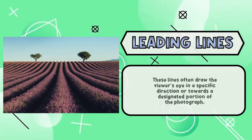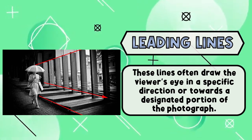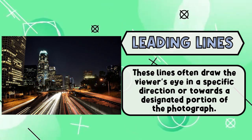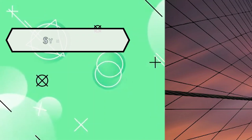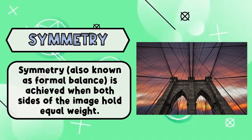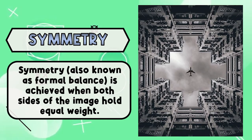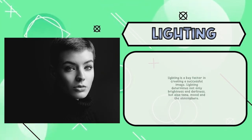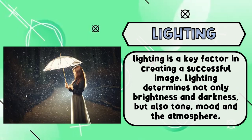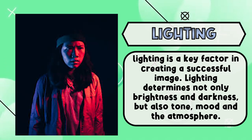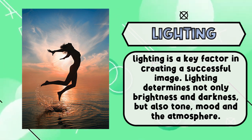Number 3, Leading Lines. These lines often draw the viewer's eye in a specific direction or towards a designated portion of the photograph. Number 4, Symmetry, also known as formal balance, is achieved when both sides of the image hold equal weight. Number 5, Lighting is a key factor in creating a successful image. Lighting determines not only brightness and darkness, but also tone, mood, and atmosphere.